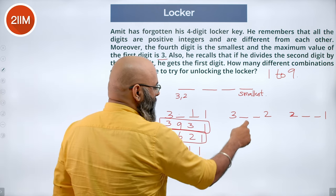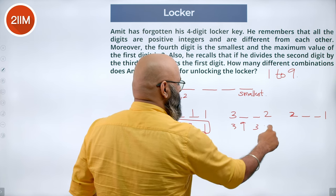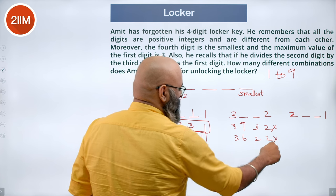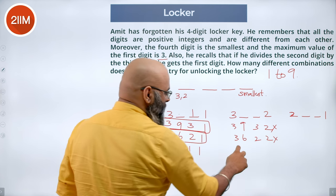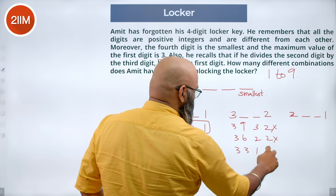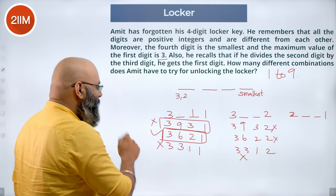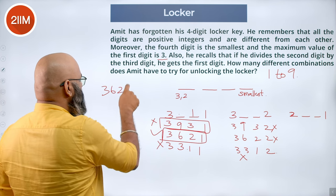The same thing goes over here. I put 9, this becomes 3 3, 9 3 2 is not possible. 3 6 2 2 is not possible because 2 2 is being repeated. 3 3 1 2 again not possible because we have 2 3's. So only one case works here which is 3 6 2 1.